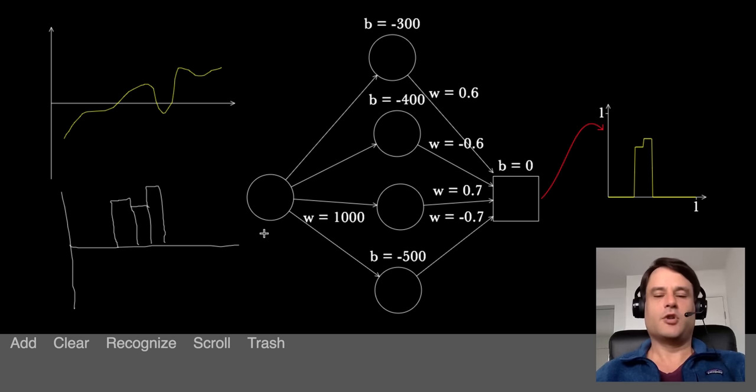We can see that by adding more and more hidden neurons, we can get any arrangement of tower functions that we like. We can make them arbitrary heights and arbitrary widths. And so we can use it to approximate any continuous function.